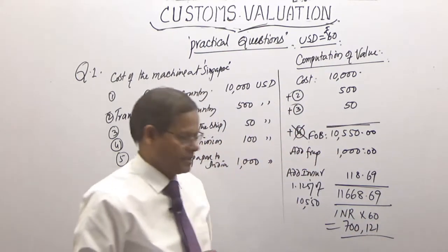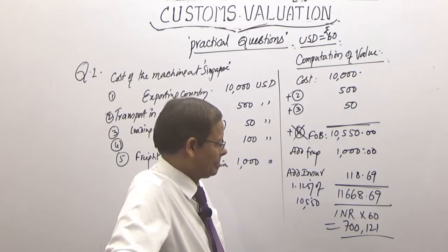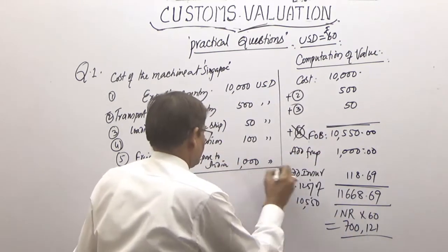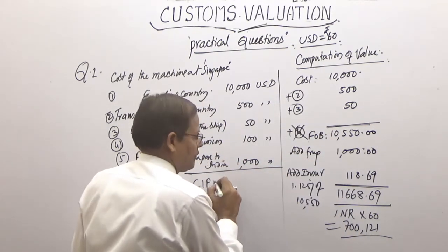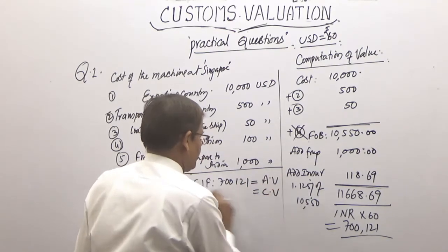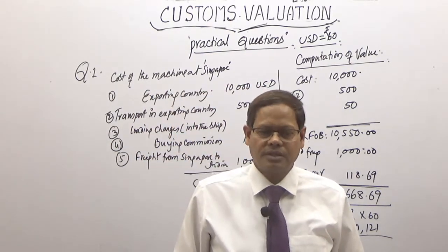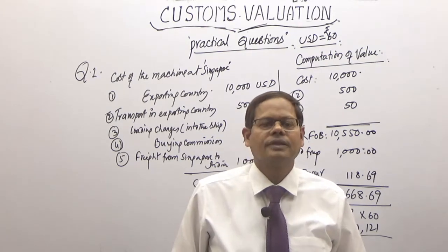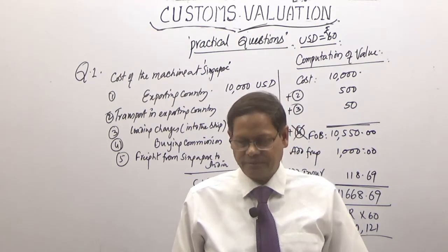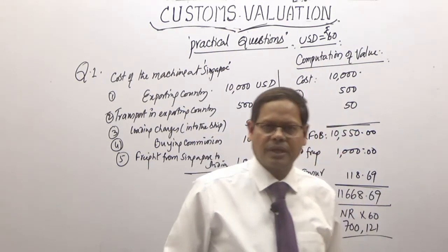The answer we obtained in Indian rupees is the CIF value — and that itself is the assessable value. There is no provision for adding landing charges. That is how we calculate the assessable value. Let us now move to the next question.